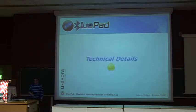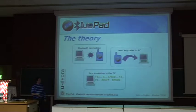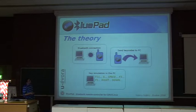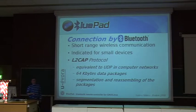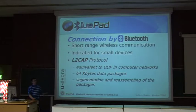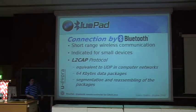Some technical details: first we create the connection between the cell phone and the computer, then the cell phone sends key codes to the computer, and the computer emulates the key codes via the UInput kernel driver. We use Bluetooth with the L2CAP protocol. We chose L2CAP over RFCOMM because RFCOMM is equivalent to TCP — if you lose a packet, the connection goes down. L2CAP has segmentation and reassembly of packets, so if you lose a packet it's not a problem; the connection stays up.